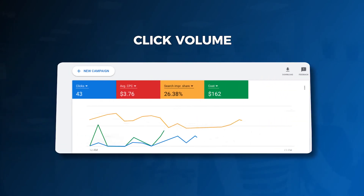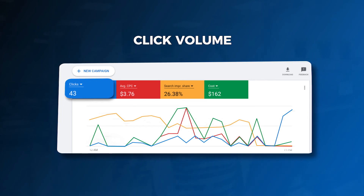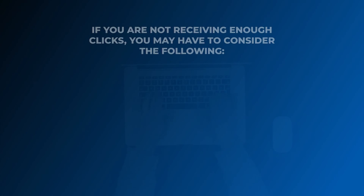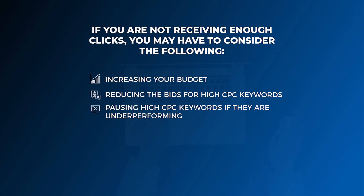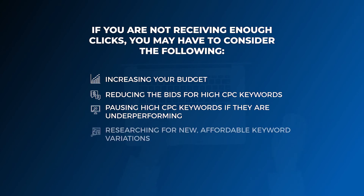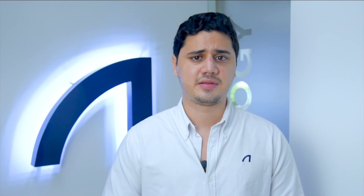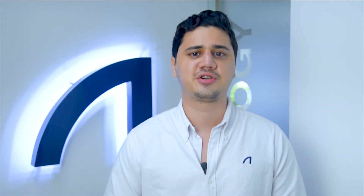Third, revise your click volume and make sure you achieve at least an average of 10 clicks per day. To calculate your click volume, divide your daily budget by your average cost per click. If you're not receiving enough clicks, consider increasing your budget, reducing bids for high-CPC keywords, pausing high-CPC keywords if they are underperforming, researching new affordable keyword variations, or reducing CPCs by increasing your click-through rate. If you're still dealing with high CPCs, check out our previous video for more detailed tips to decrease your campaign's cost per click.